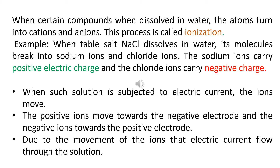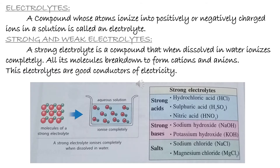If there are no ions in the solution, current cannot travel from one point to another because it needs carriers to move. These ions are responsible for the movement of electric current. Now, an electrolyte is a compound whose atoms ionize into positive or negative charges in solution.